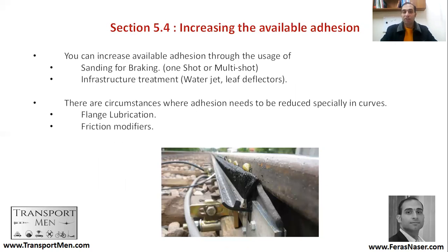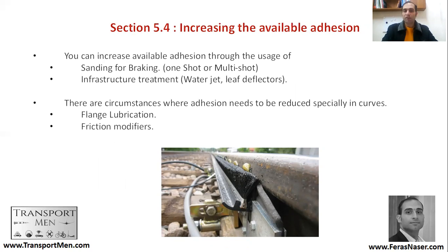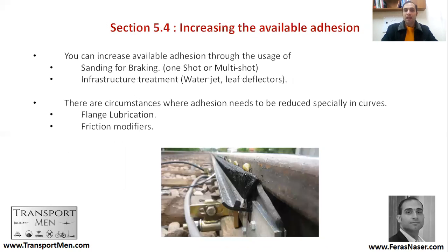To increase available adhesion for braking, a sand shot can be used — a nozzle injects sand onto the track, as shown in the picture. Infrastructure can also be improved by removing leaves through water jets or other arrangements to restore original adhesion levels. Sometimes it is necessary to decrease adhesion through lubrication and friction modifiers, especially in curves, to reduce wear and damage.